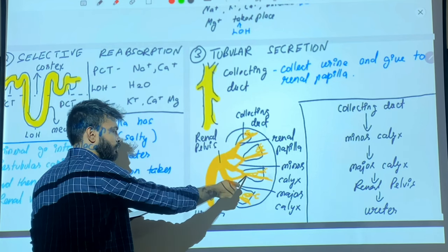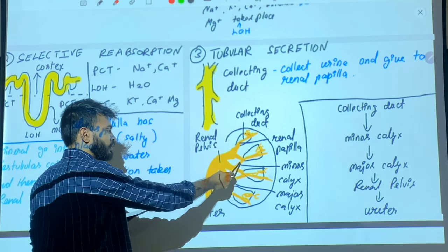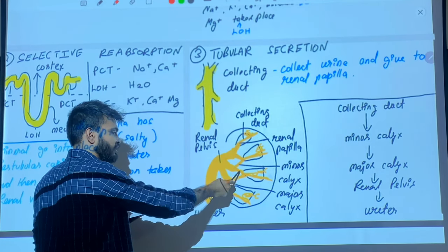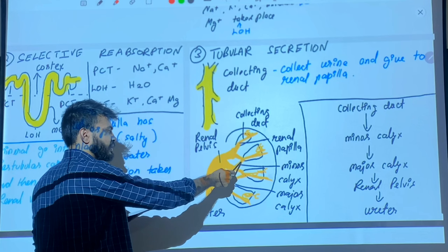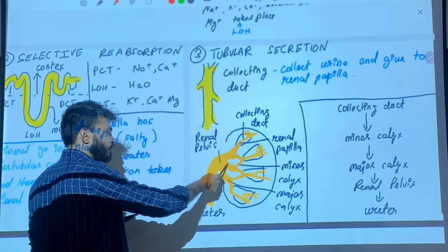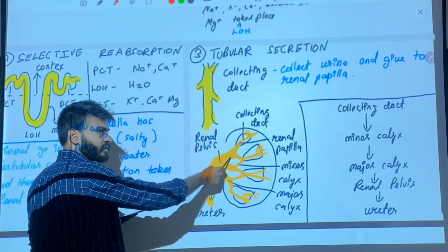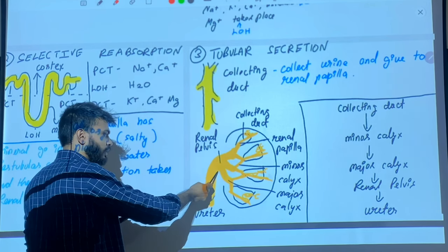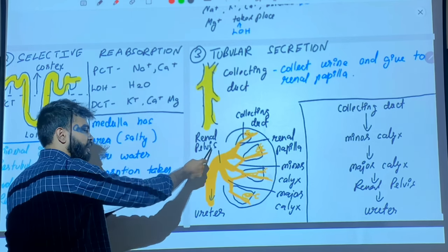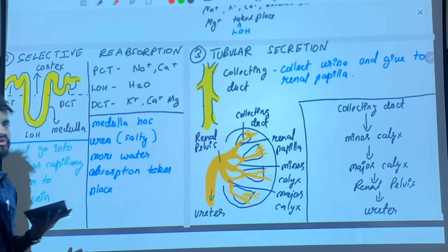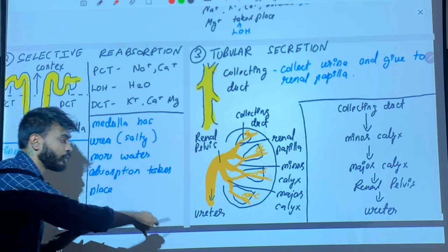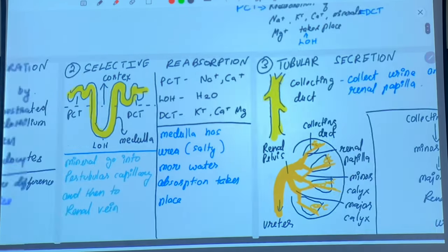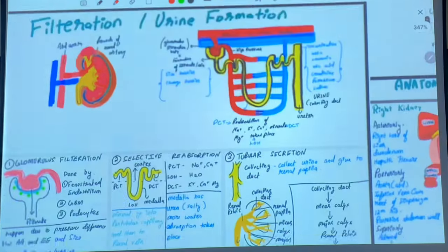The collecting ducts give urine to the minor calyxes — the smaller tube-like structures. These minor calyxes give urine to the major calyx, which becomes one large tube known as the renal pelvis. The renal pelvis gives urine to the ureter, and from the ureter the urine goes into the bladder. This is how the three steps of filtration take place inside the kidney.